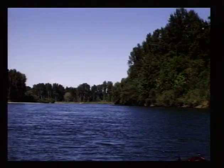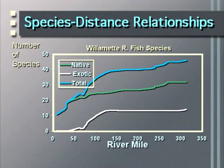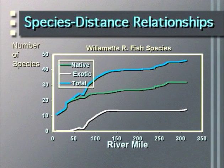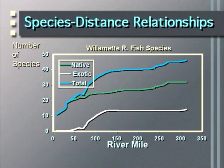In aquatic systems we see a slightly different relationship. Instead of a species-area curve, we think of it as a species-distance curve, in which we notice a predictable change in the number of species as we move downstream. From the Willamette River example, we see an increase in the number of species as we move from headwater streams downstream to the mouth of the Willamette River in Portland, with more native species as we go from the mountains down to the valley.